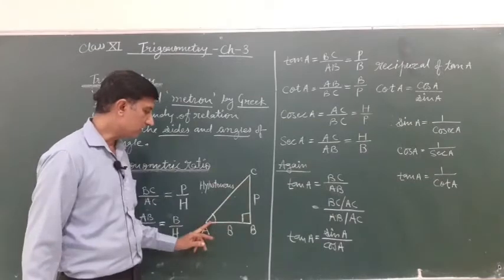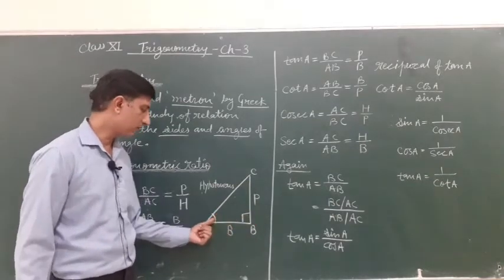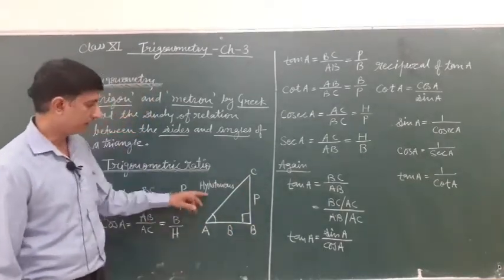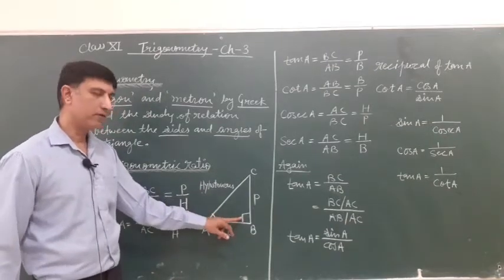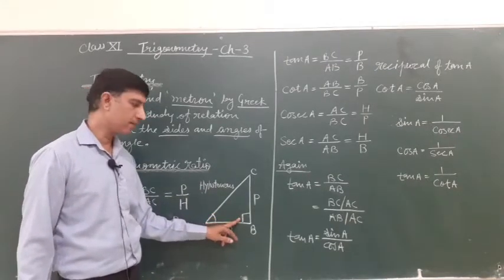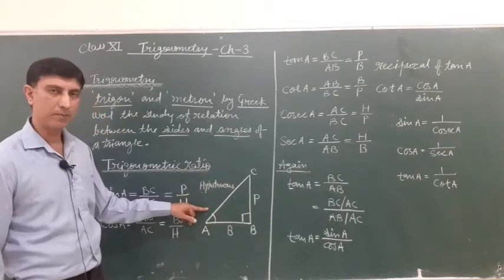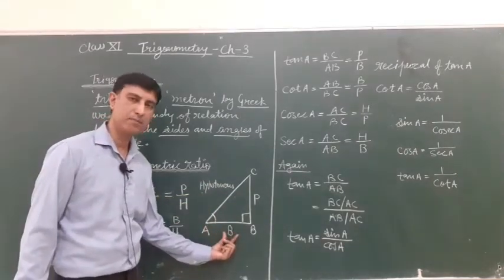So BC is perpendicular side to A and opposite to right angle or 90 degree. AC is hypotenuse and third side AB is base.